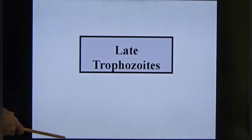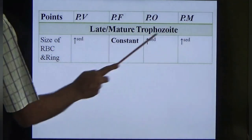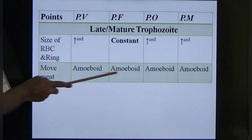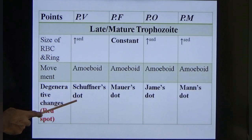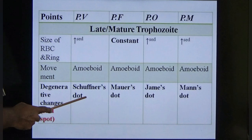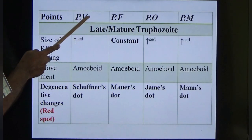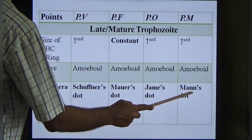In late trophozoites, size of the RBC increases in vivax, ovale and malariae, but in falciparum the size of the RBC and ring remains constant. Movement is amoeboid. Degenerative changes occur inside the RBC — the parasite takes the globin part of hemoglobin as food, leaving the heme part, which appears as red spots called 'dots': Schüffner's dot in vivax, Maurer's dot in falciparum, James' dot in ovale and Ziemann's dot in malariae.